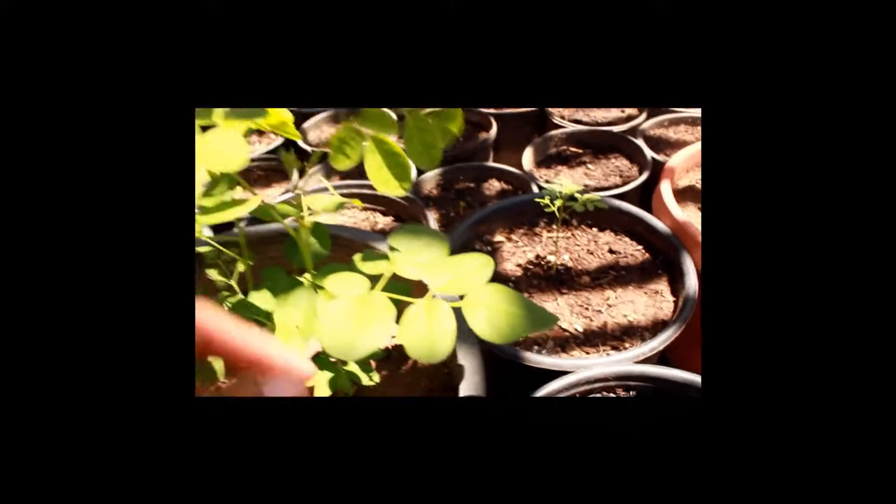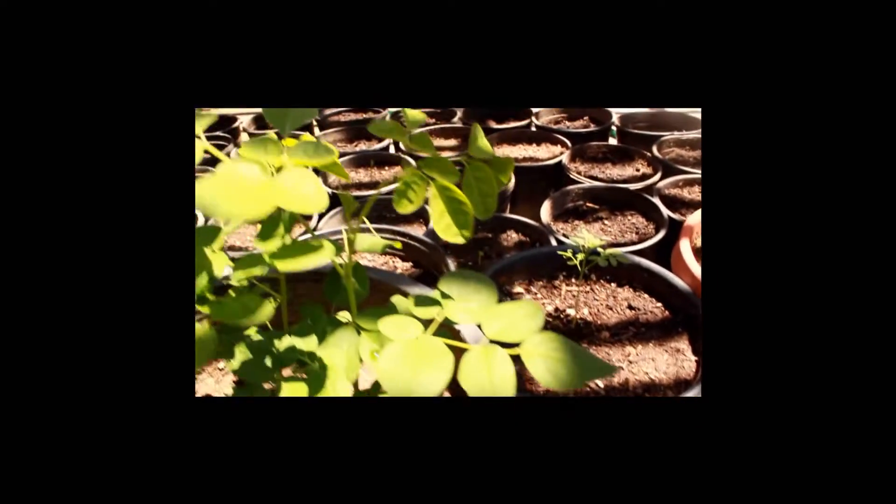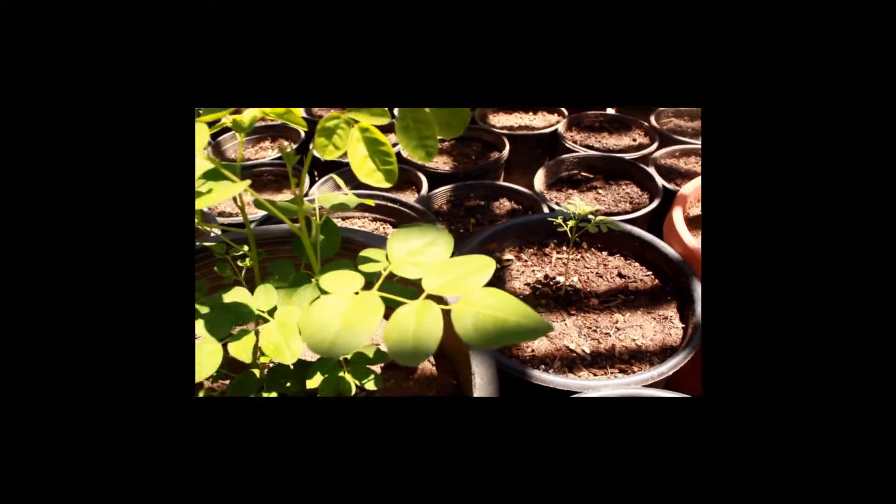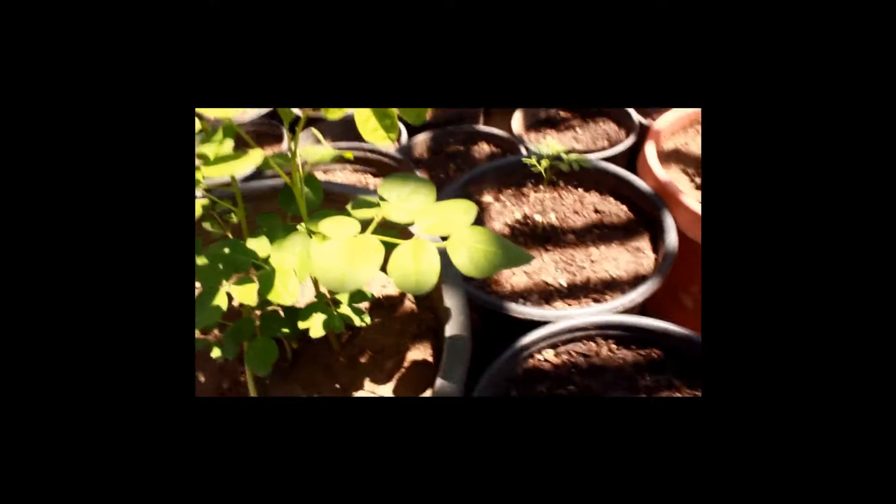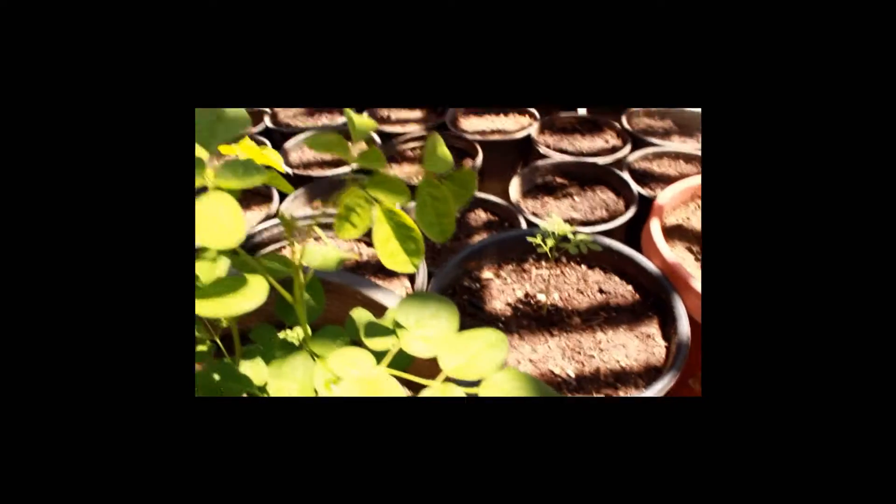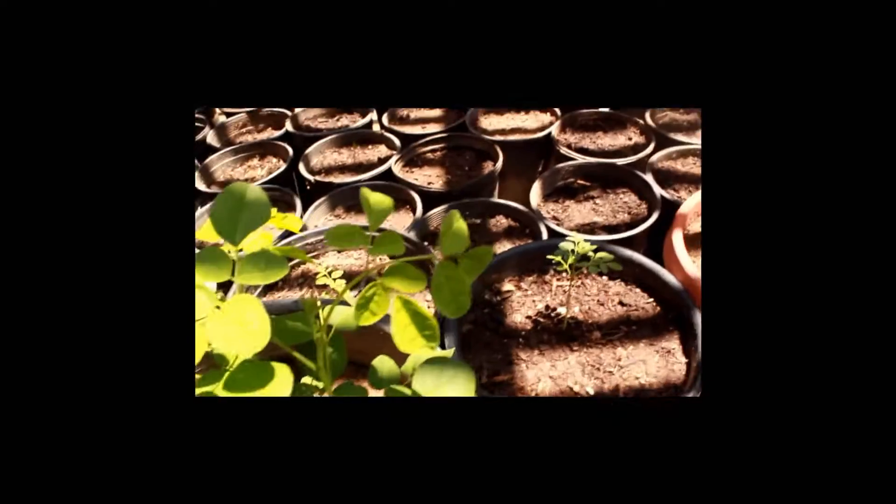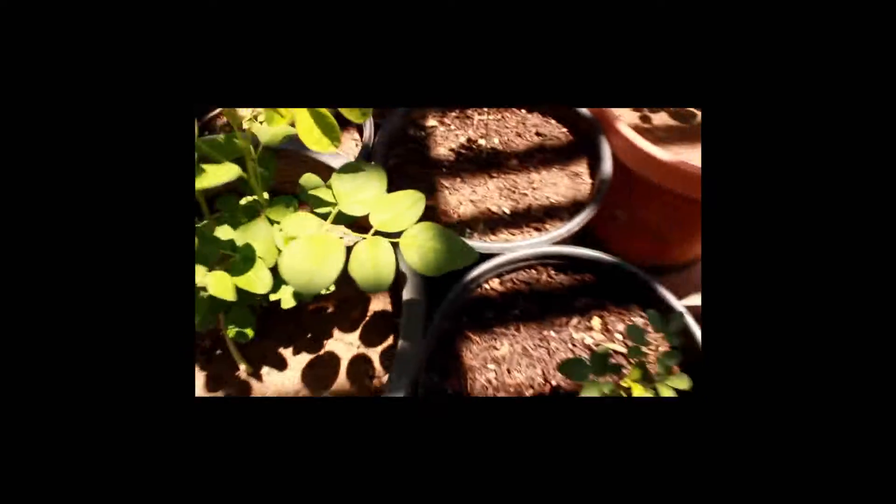So first here is a moringa tree, the oleifera, and this one here is about 11 to 12 inches tall. And when you prune them, you actually want to prune from the top, not necessarily cutting the top off like this, but more so...